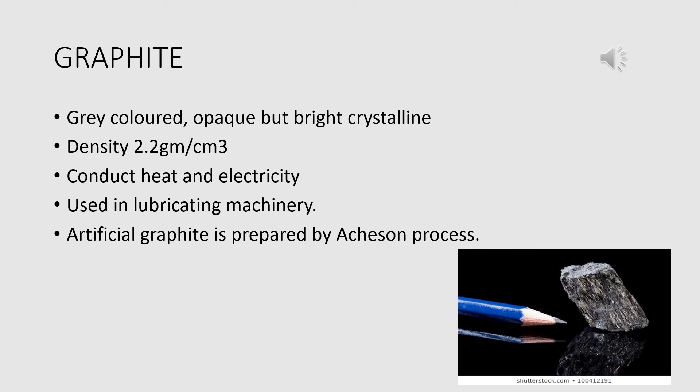Graphite is soft and greasy to touch. On rubbing, graphite makes a black mark on paper, so it is called black lead or plumbago. The density of graphite is 2.2 g/cm³. Graphite can conduct heat and electricity.